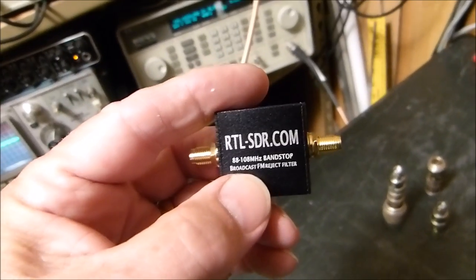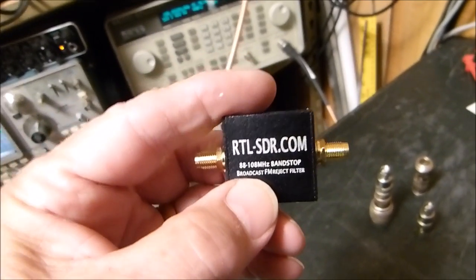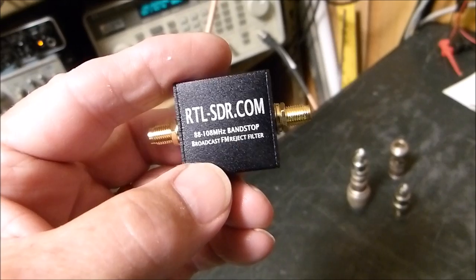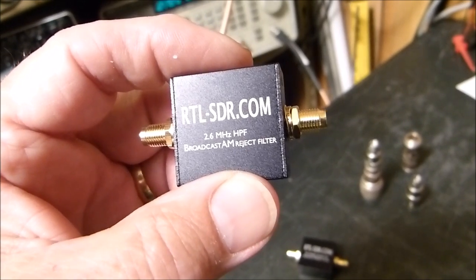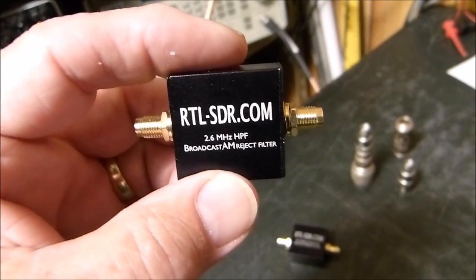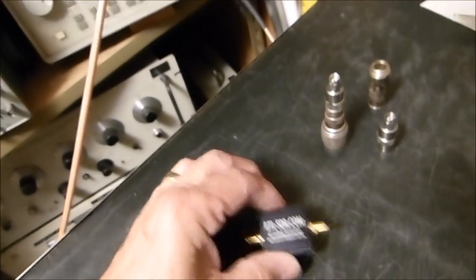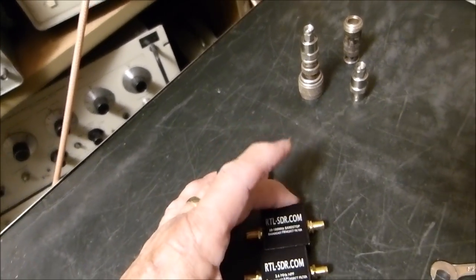It's called an 88 to 108 megahertz band stop filter, and the other one is a 2.4 megahertz HPF high-pass filter. So let's see how they measure. We'll measure both of them, it's quick and easy. What I'm using here is a Hewlett-Packard signal generator.